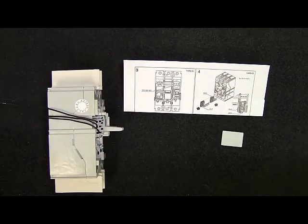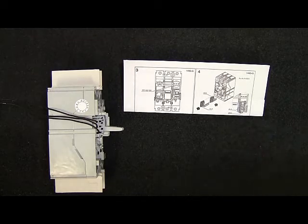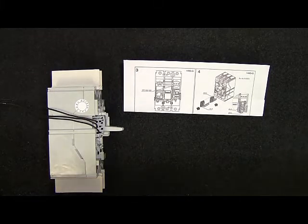You'll find a small plastic tab among the parts you received with your breaker. Slide that over the wires, creating a channel for the auxiliary contact wires to follow.